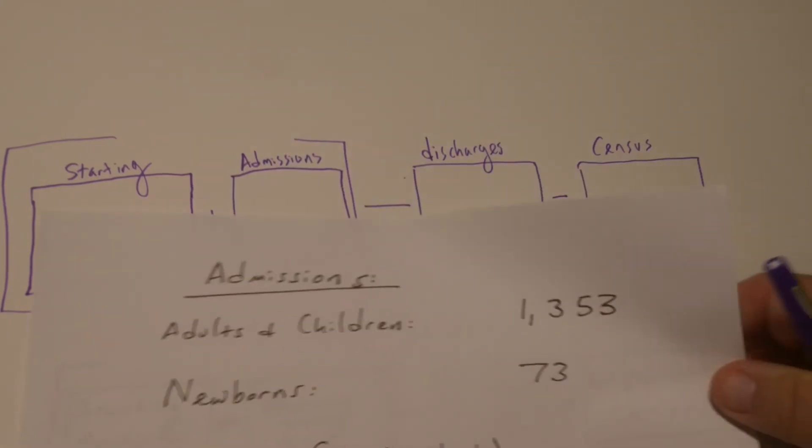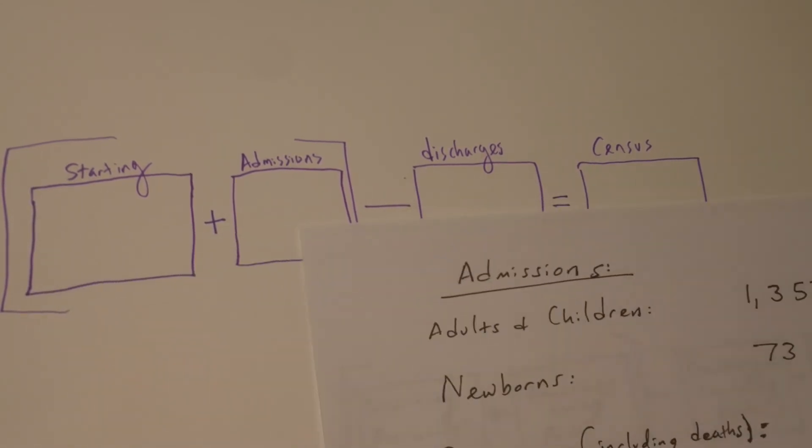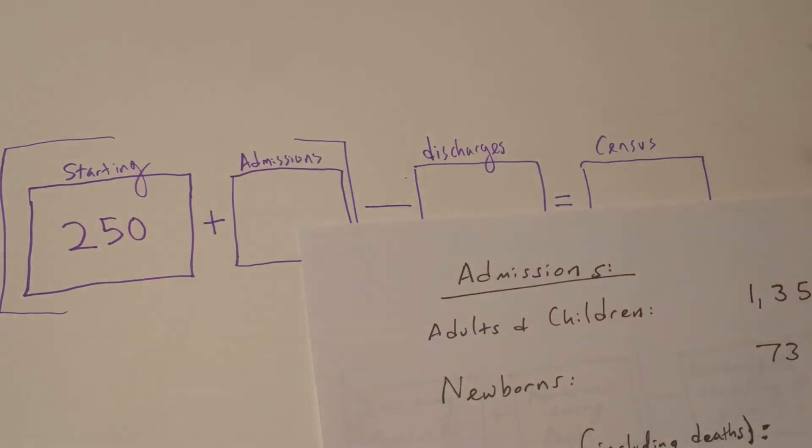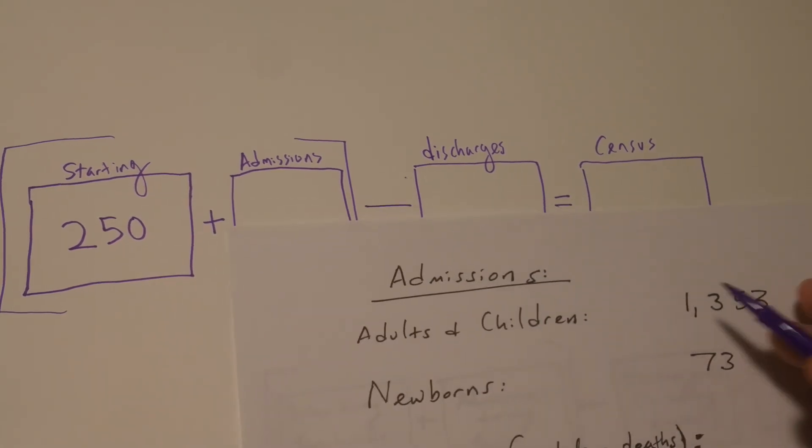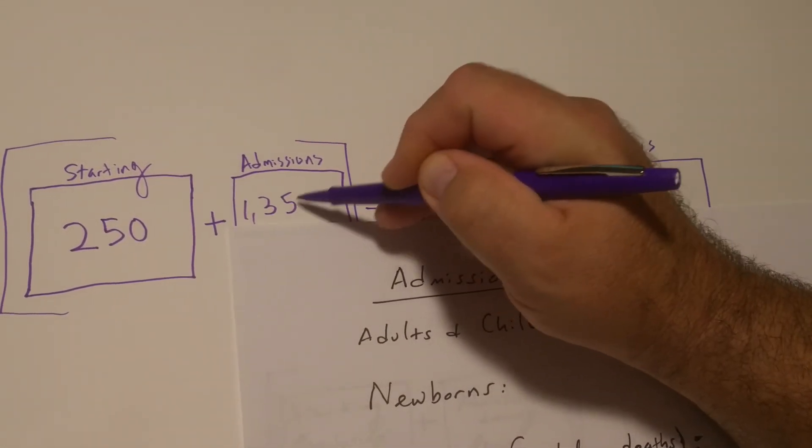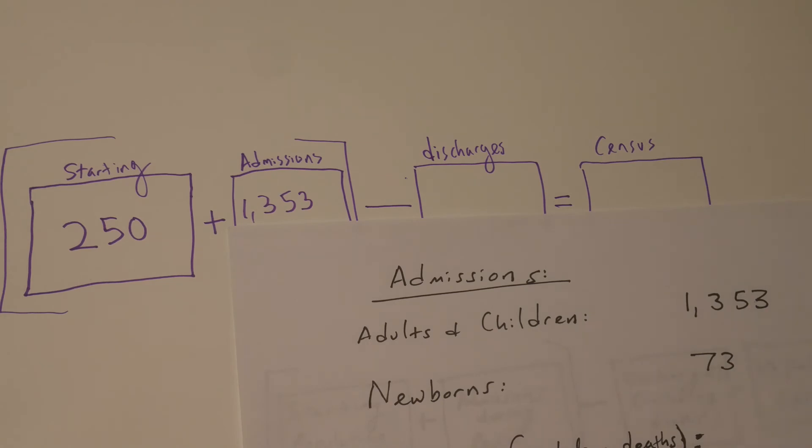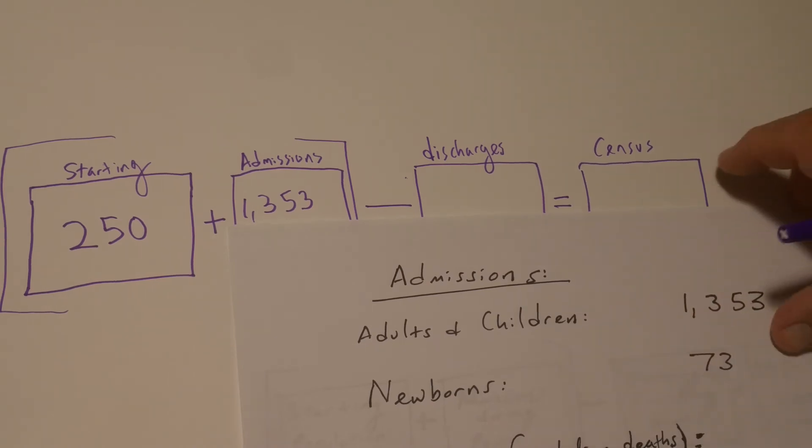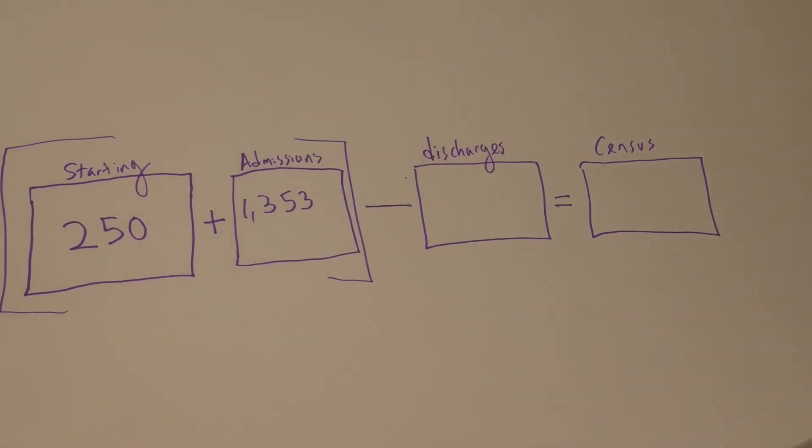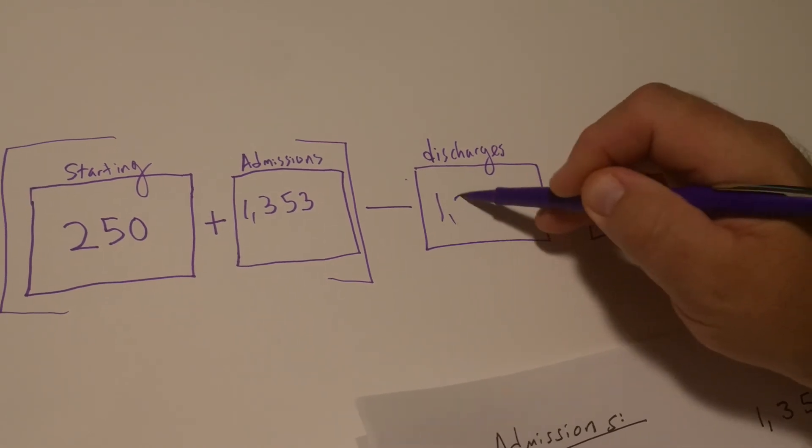So, we looked at our information that we started with. We started with 250 adults and children. I'm just going to fill that in there. And our admissions, including adults and children, is 1,353. And I got that right from our data. I'm going to ignore, for this moment, the newborns. Because that's going to be calculated separately. And then, we're going to look at our discharges. Adults and children. So, it's 1,348.